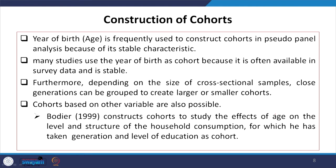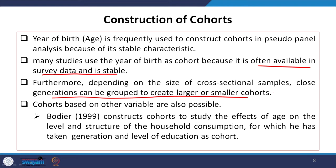For cohort construction, we use year of birth data, which is frequently used because of its stable characteristics. Many studies use year of birth as the cohort because it is often available in survey data and is usually stable. Depending on the size of the cross-sectional samples, close generations can be grouped to create larger or smaller cohorts. Since this variable is usually covered in the questionnaire, we can define more or smaller cohorts based on the size.